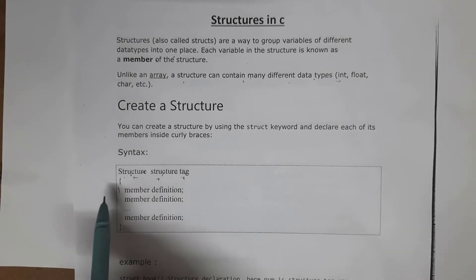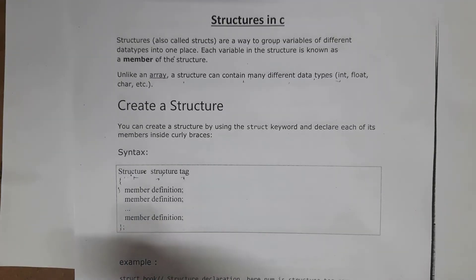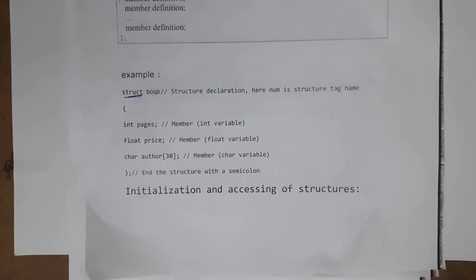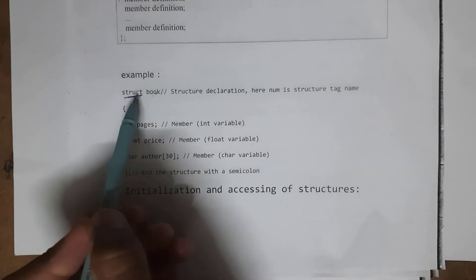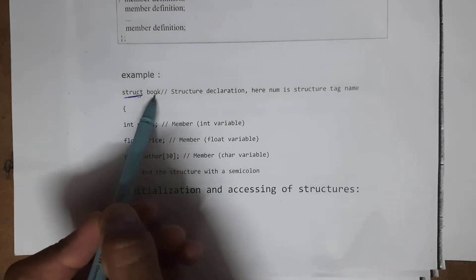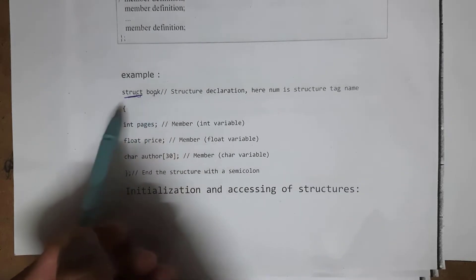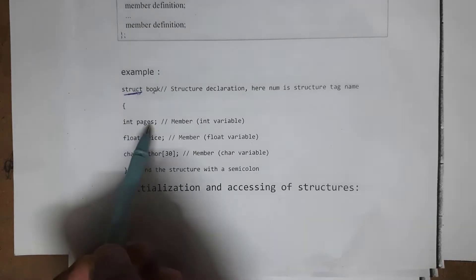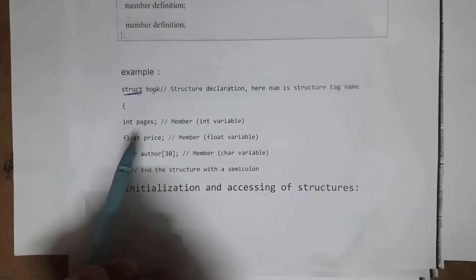This is the syntax of a structure: 'struct structure_tag { }'. The structure tag is nothing but the name of the structure. Inside the curly brackets we write members, which are variables of different data types. For structures we use the keyword 'struct', similar to how we use 'int' for integers. For example, 'struct book' — here 'book' is the name of the structure.